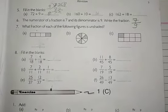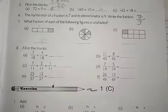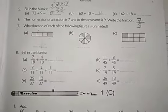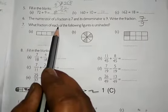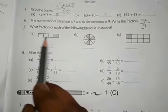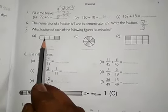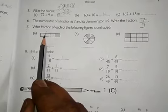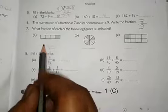Good morning children. Today we will see exercise 1B question number 7. What fraction of each of the following figure is unshaded? See the figure A. Here have four box and three box are unshaded.